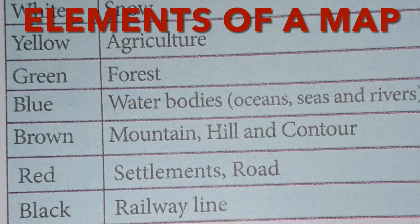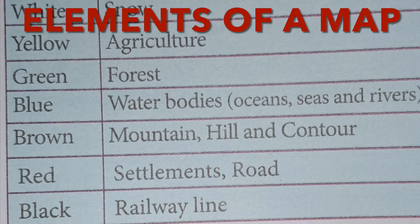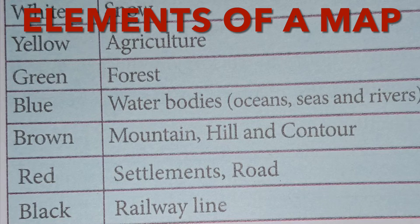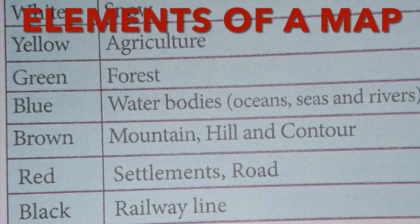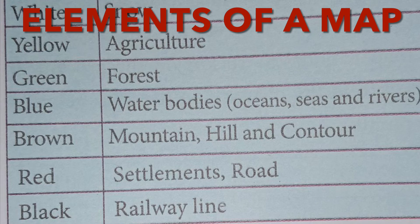The basic elements of maps are title, direction, scale, legend or key, and signs and symbols.